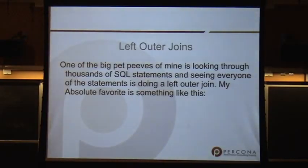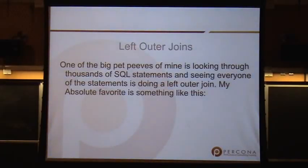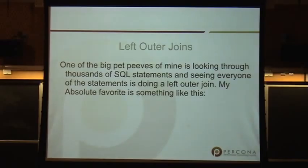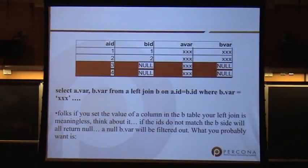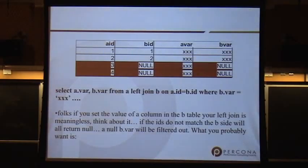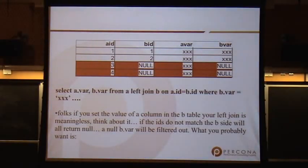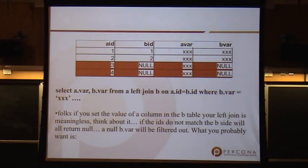One of my pet peeves — I see a lot of left outer join usage. People love left outer joins, thinking they're needed for any operation, typically because they want to make sure they don't miss any data. This is generated a lot by ORMs. But you'll have a left outer join where B is the outer join table showing everything where B is null, and then in the WHERE clause you say WHERE B equals something — which removes all the nulls. So there was no point in doing the left outer join.